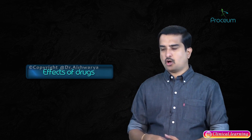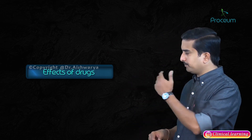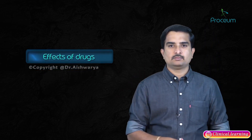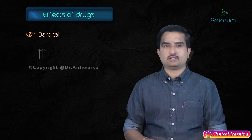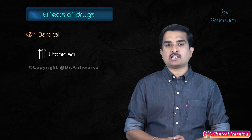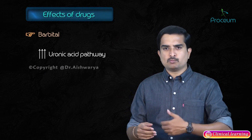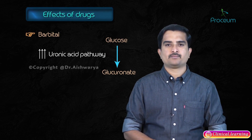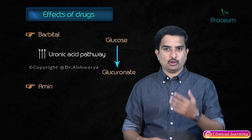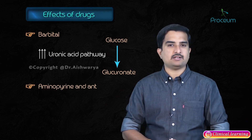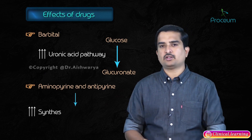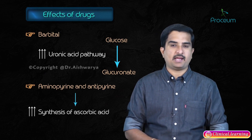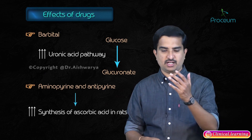Regarding the effects of drugs on the uronic acid pathway, administration of drugs such as barbital increases the uronic acid pathway to synthesize more glucuronate from glucose. Drugs like aminopyrene and antipyrene increase the synthesis of ascorbic acid production in rats.